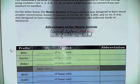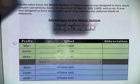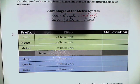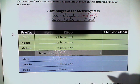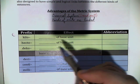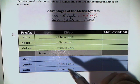Before we get into the different measurements in the metric system, the metric system is full of a bunch of prefixes. Down here in this chart I have a number of them — not all of them, there are more, but this is the set we're going to stick with for right now. Our first prefix is kilo.